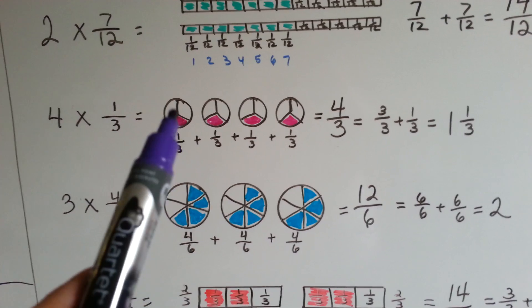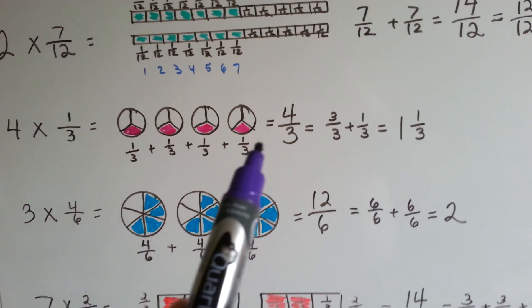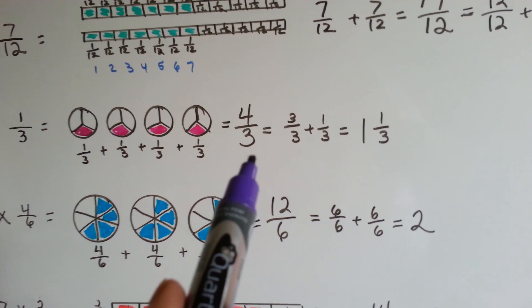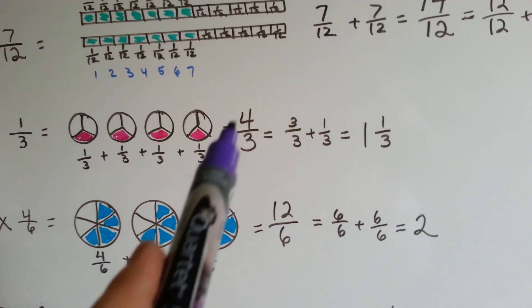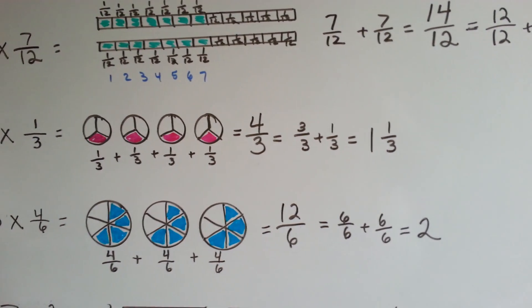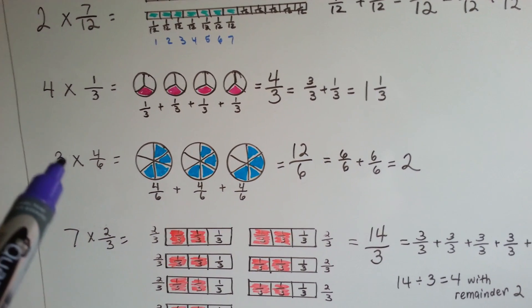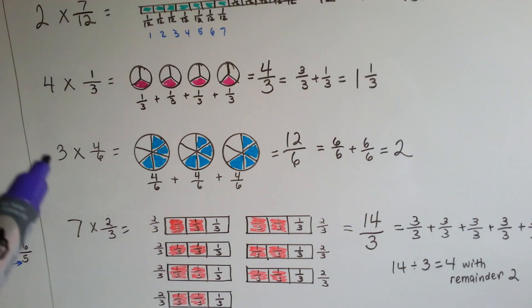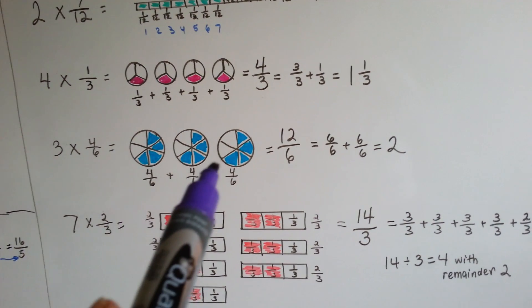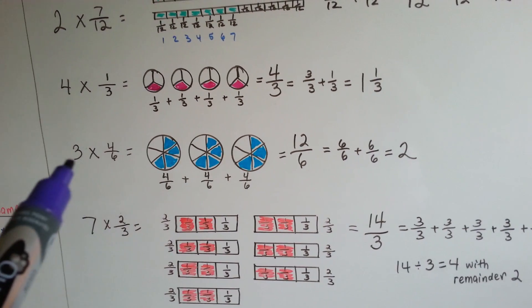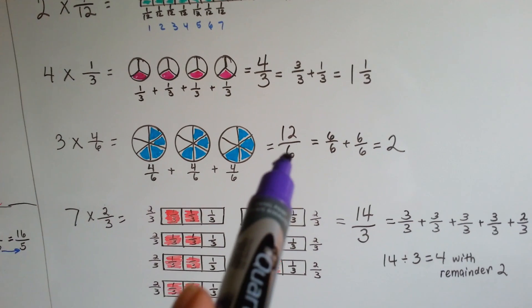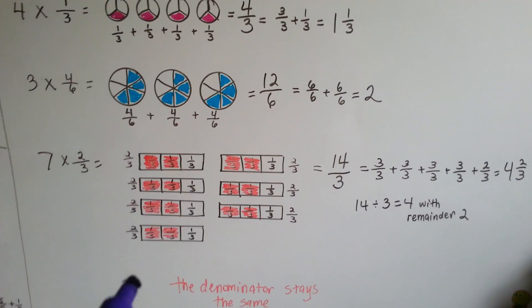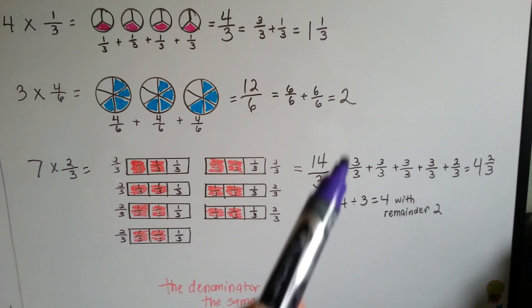Let's look at 4 times 1 third: 1 third plus 1 third plus 1 third plus 1 third. We can add them up to get 4 thirds, or say 4 times the numerator 1 is 4 over 3. Either way, there's a 3 thirds hiding inside with 1 third left over, so 3 goes into 4 one time with 1 remaining, giving 1 and 1 third. Next, 3 times 4 sixths — each circle is split into 6 parts and the blue ones represent 4 sixths, with 3 circles. 4 plus 4 plus 4 is 12 over 6, or 3 times the numerator 4 is 12 over 6. Since 6 fits into 12 two times, the answer is 2 whole.